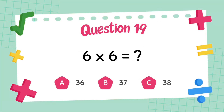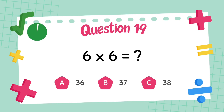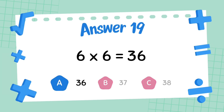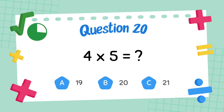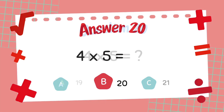What is 7 multiply 2? What is 6 multiply 6? The answer is 36. What is 4 multiply 5? The answer is 20.